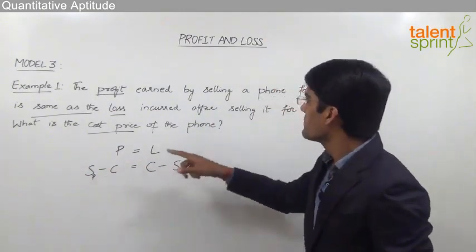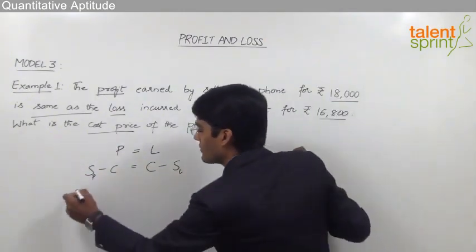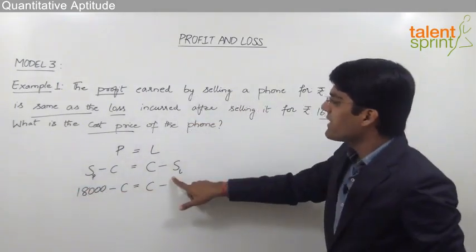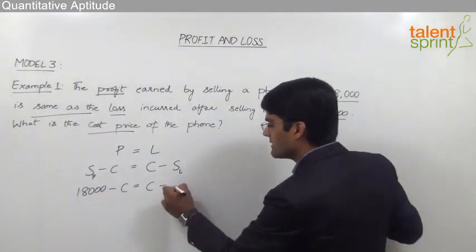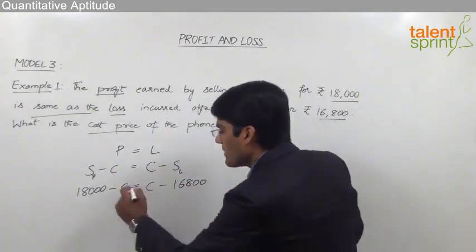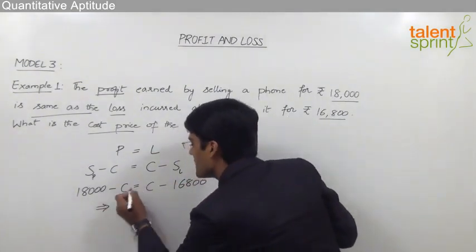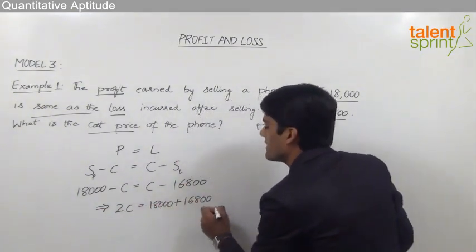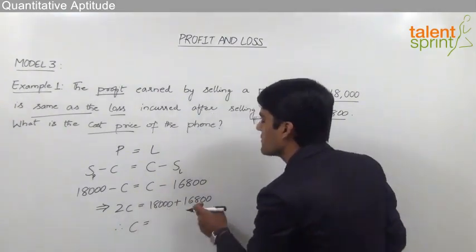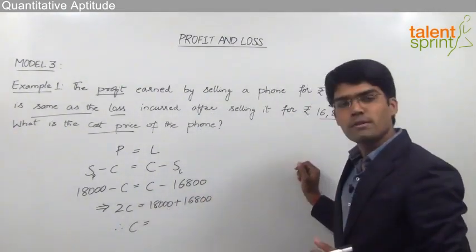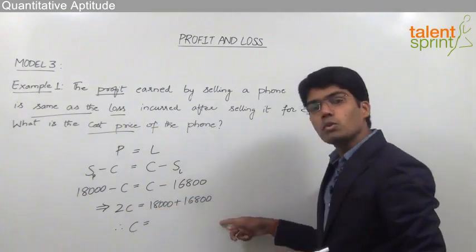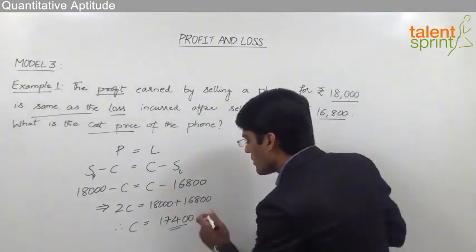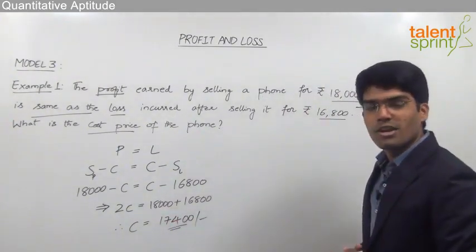The selling price when it was sold at profit was Rs.18000. So, 18000 minus cost price should be equal to cost price minus 16800 (the selling price when sold at a loss). From this, C plus C gives us 2C equal to 18000 plus 16800. Therefore, C equals 34800 divided by 2, which comes out to be Rs.17400. So the cost price of the phone is Rs.17400.